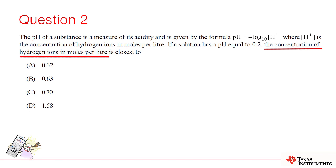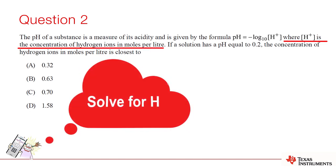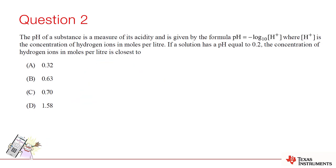Now, when you read the information, you'll know exactly what to look for. H is the concentration of hydrogen ions in moles per litre. So we need to find the value of H. The pH of the substance is a measure of its acidity given by the formula. So, to answer the question, we need to know pH.